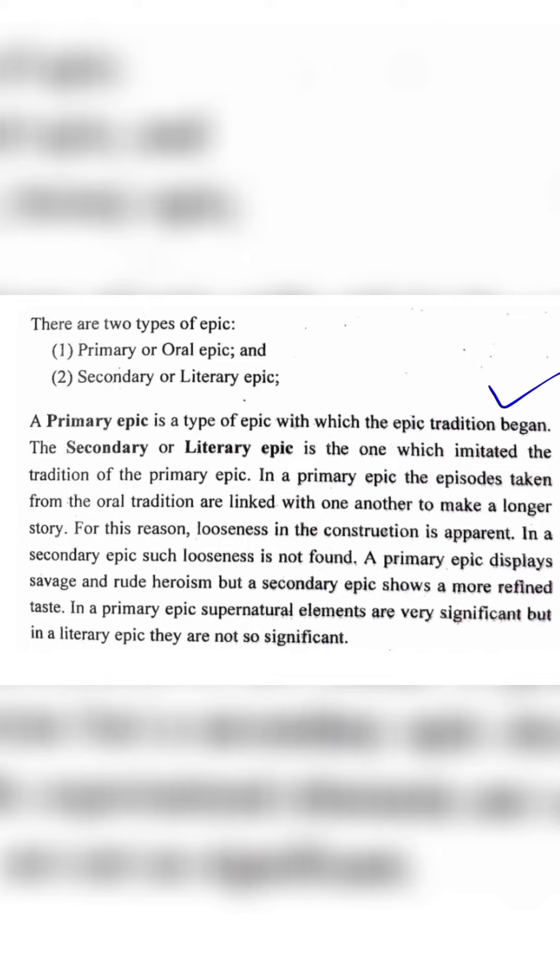In secondary epic, the elements of primary epic are imitated and copied. In primary epic, the epic sources are linked to one another, and the epic source is oral tradition. That is why there is looseness.